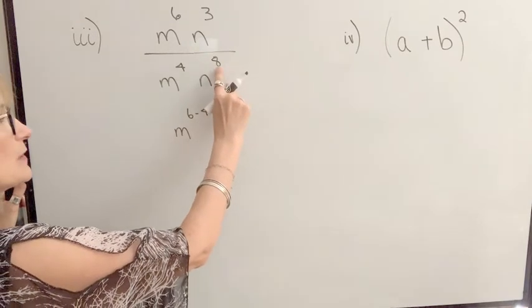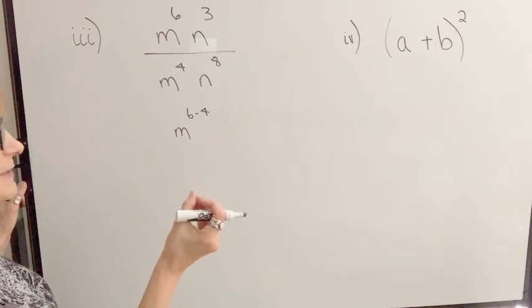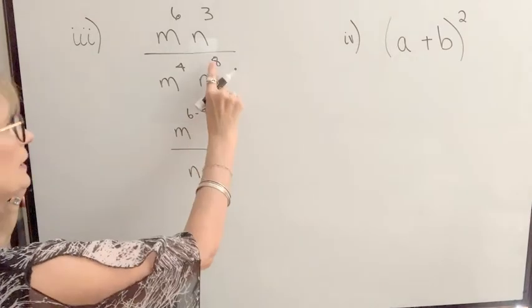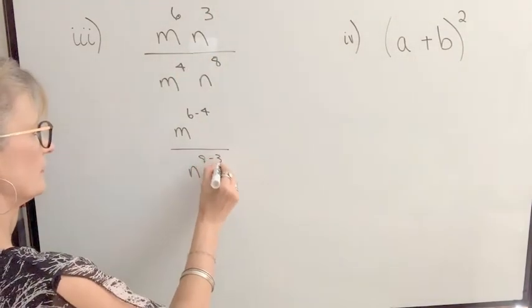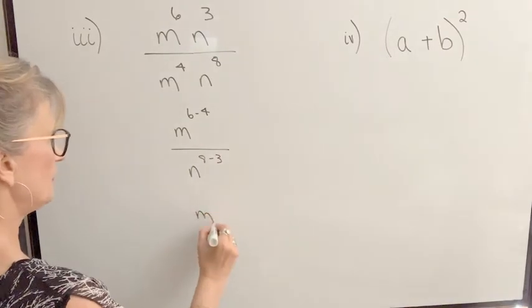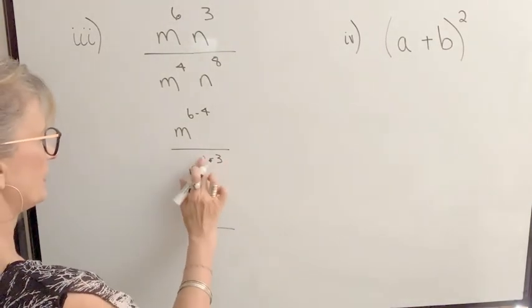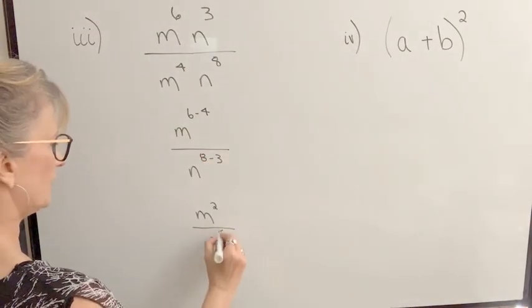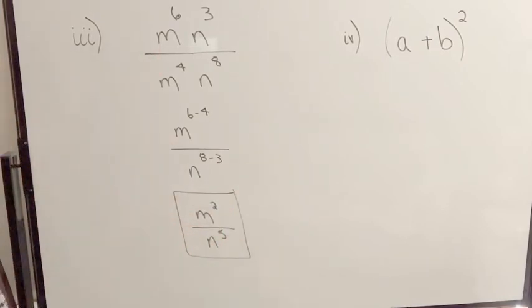Now, I've got n cubed divided by n to the eighth, because this number is larger, my power that has n in it as a base is going to stay in the denominator, so that's going to be n to the, and I'm going to subtract eight minus three. So the final result will be m to the two divided by n to the fifth, and that's my final result.